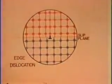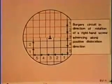The Burgers Vector of an edge dislocation is normal to the dislocation. The slip or glide plane is defined by the Burgers Vector and the dislocation line.